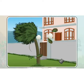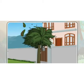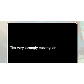Children, leaves of a tree are blowing in the air. Some plants are also blowing. Do you know why this is? Yes, this is because of the very strong moving air. Sometimes air moves very strongly. The very strongly moving air is called a storm. The storm makes the plants and leaves blow.